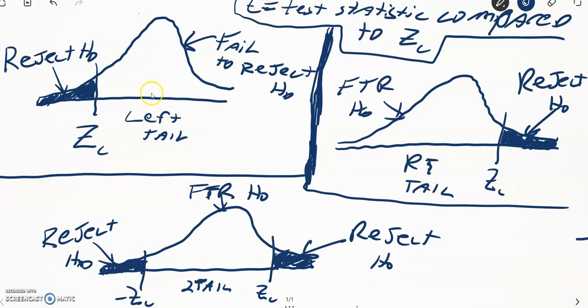If the test statistic t is less than the z-critical value in a left tail test - you have to know which tail test it is - then we reject the null hypothesis. If that test statistic t is greater than z-critical, we fail to reject the null hypothesis.